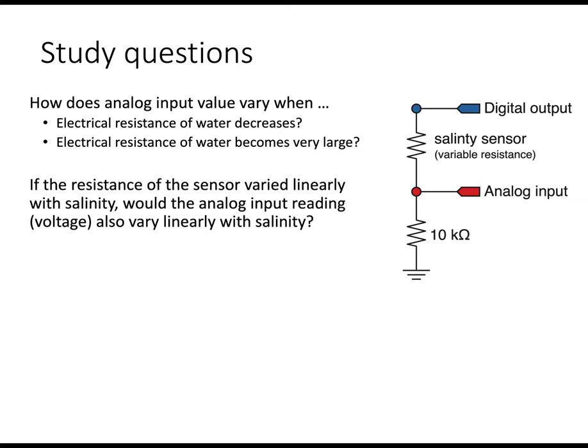Also, we note that if it was a linear varying response, that is, the sensor varied linearly with salinity, would the output reading change linearly? This is the standard formula for a voltage divider. As R1 changes, it's in the denominator, and there's a nonlinear response, even if the resistance were to change linearly with salinity.